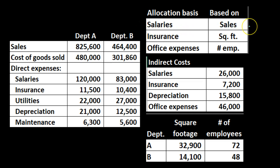Our chosen bases are: salaries will be based on sales, insurance will be based on square footage, and office expenses will be based on number of employees. We have indirect salaries of $26,000 — these salaried individuals work for multiple departments, so we have to take their salary expense and apply it out to the departments they work in. It is not a direct salary we can apply directly to Department A or B, so we need to find some method to do so. We will use sales as a percentage to drive that allocation.